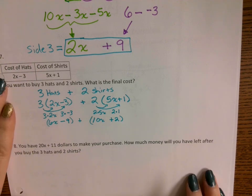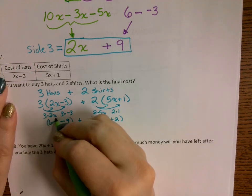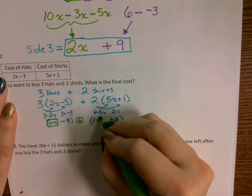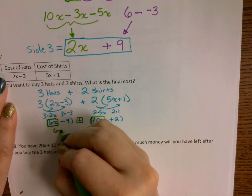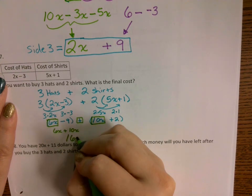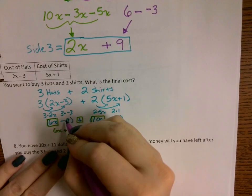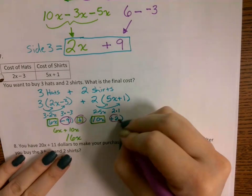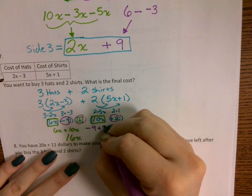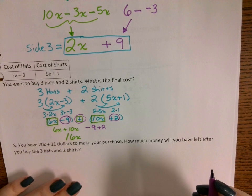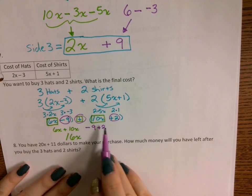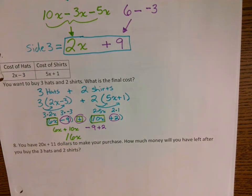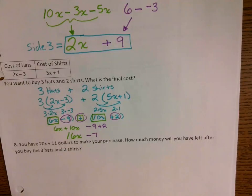So we have 6x minus 9 plus 10x plus 2. Combining: 6x plus 10x is 16x. Then negative 9 plus 2 is negative 7. Our total cost for the three hats and two shirts is 16x minus 7.